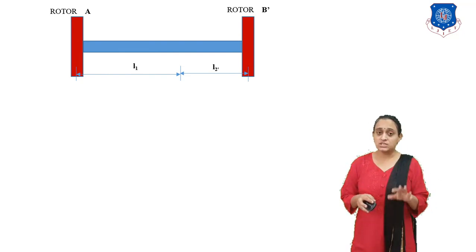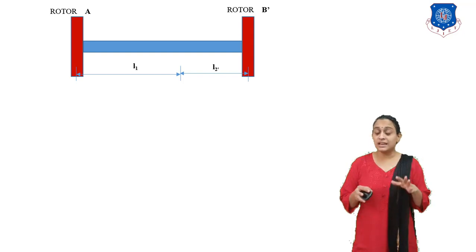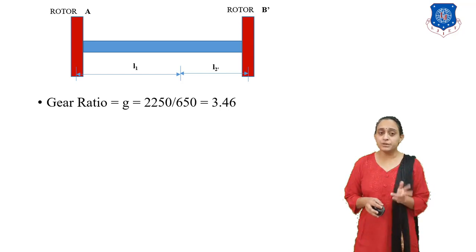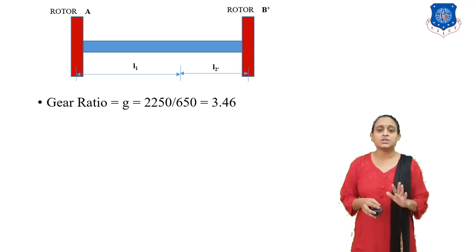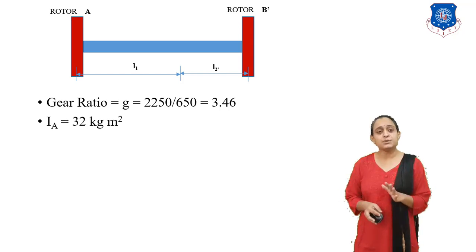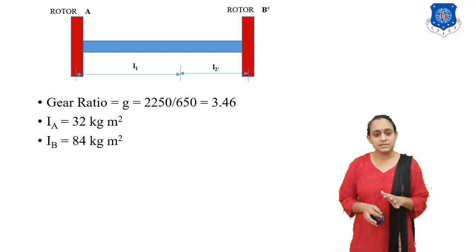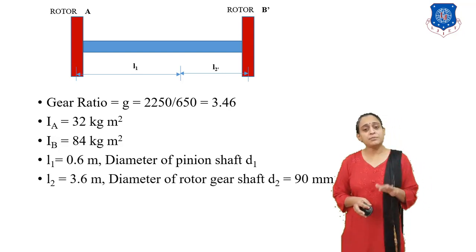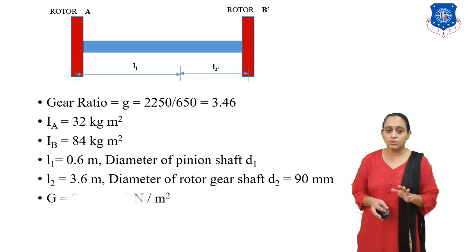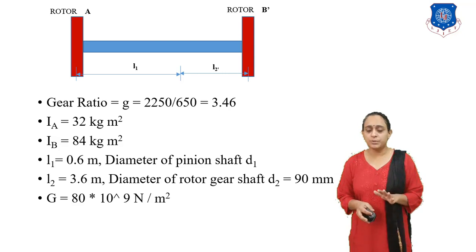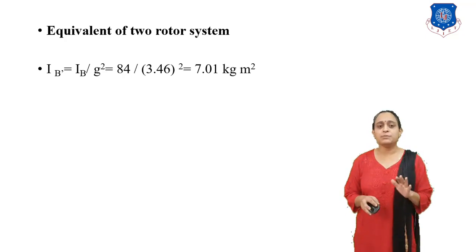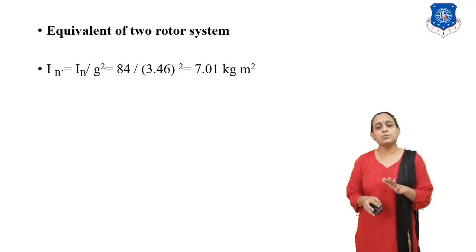Since we neglect the inertia of gears, we consider only rotor A and rotor B-dash. L1 = 0.6 m (diameter D1 to find), L2 = 3.6 m, D2 = 90 mm, Ia = 32 kg·m², Ib = 84 kg·m². The gear ratio G = 2250/650 = 3.46. We calculate Ib-dash = Ib/G² = 84/(3.46)² = 7.01 kg·m².